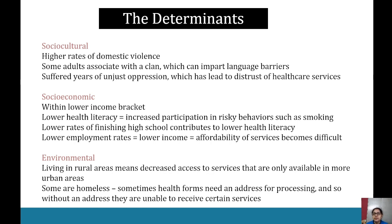For the determinants we're looking at social-cultural, socioeconomic, and environmental. Socio-culturally, Aboriginal and Torres Strait Islander peoples have higher rates of domestic violence, some are associated with a clan which can impart language barriers, and they have suffered years of unjust oppression which has led to distrust of healthcare services. Socioeconomically, they are within the lower income bracket and have lower health literacy, which results in increased participation in risky behaviors like smoking, and lower rates of finishing high school.